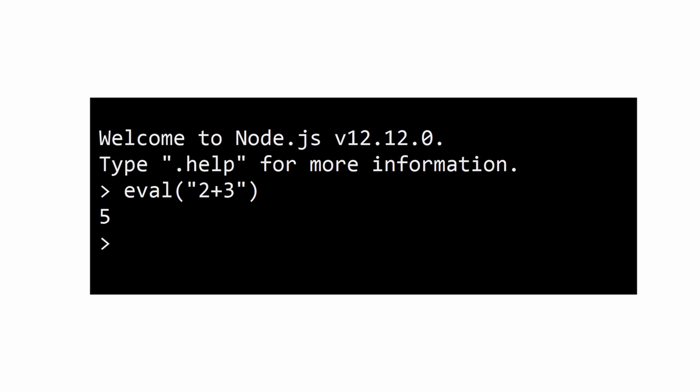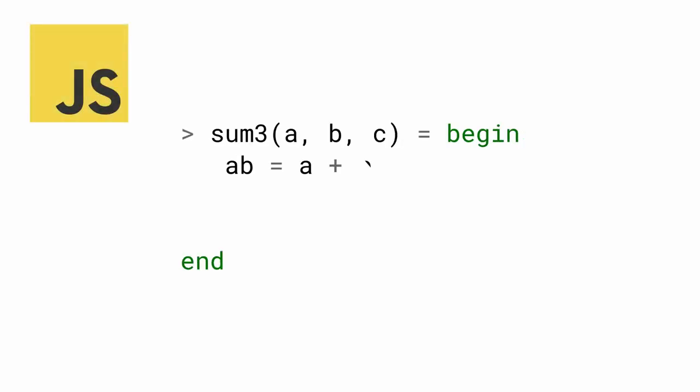Furthermore, eval can dynamically alter the running program by changing its function definitions. For instance, consider this program. We will use it as a running example throughout the presentation. Here, we define function sum3, which returns the sum of its three parameters a, b, and c.